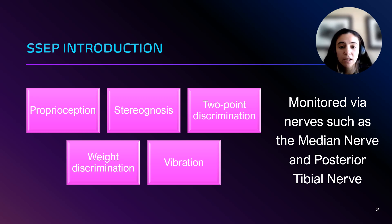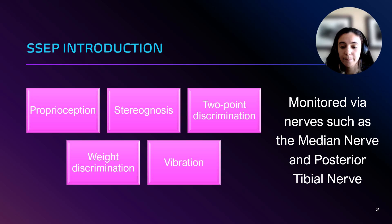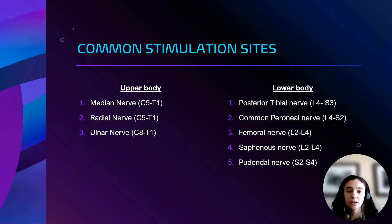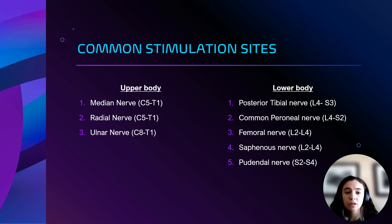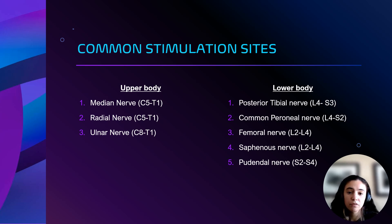By stimulating these nerves and recording responses at different anatomical locations, we can detect possible nerve damage in real time. There are many sites from which an SSEP may be stimulated, split into upper body and lower body sites. Upper body sites include the median nerve, radial nerve, and ulnar nerve. Lower body sites include the posterior tibial nerve, common peroneal nerve, femoral nerve, saphenous nerve, and pudendal nerve.